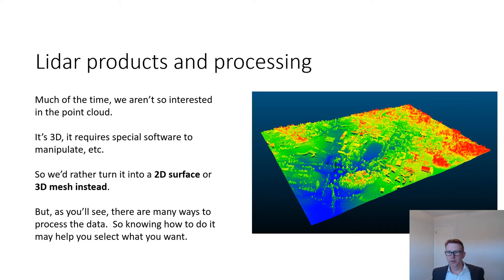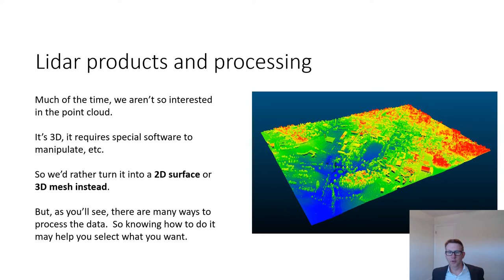Why might we not want to deal with the 3D point cloud? It might be overkill for what we're working on. As a geovisualization expert, you know that sometimes things can be overwhelming to the user. Throwing the kitchen sink at a visualization is not always the best plan. We might want to strip that down and make things a little bit cleaner and easier to see. Rather than dealing with these points, which when you zoom in often look very strange, we probably will want to go with something simpler — a 2D surface or a 3D mesh instead.